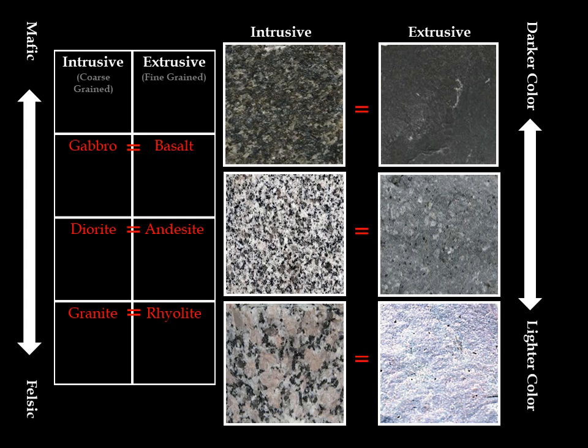This slide shows the three most common intrusive rocks and the three most common extrusive rocks. A gabbro is made up of the same stuff as a basalt — only the gabbro cooled inside of the earth, and the basalt flowed out onto the surface and cooled. The diorite is made up of the same stuff as the andesite, and the same is true for the rhyolite and the granite. Diorites and granites cooled under the surface of the earth, where andesites and rhyolites cooled on the surface.